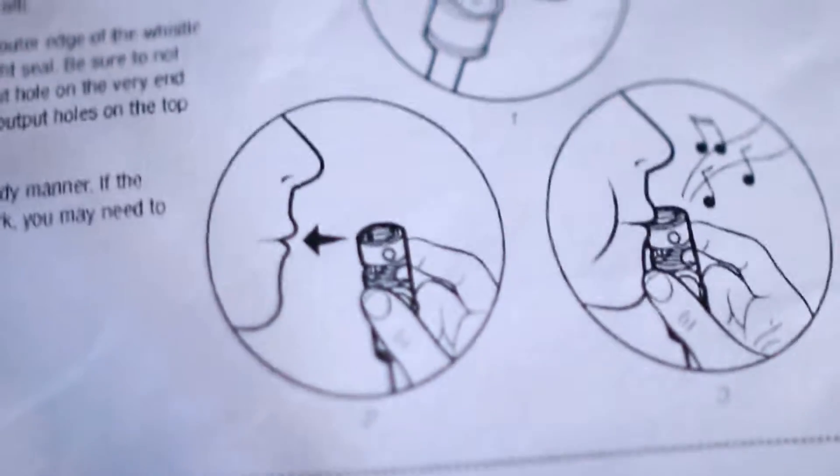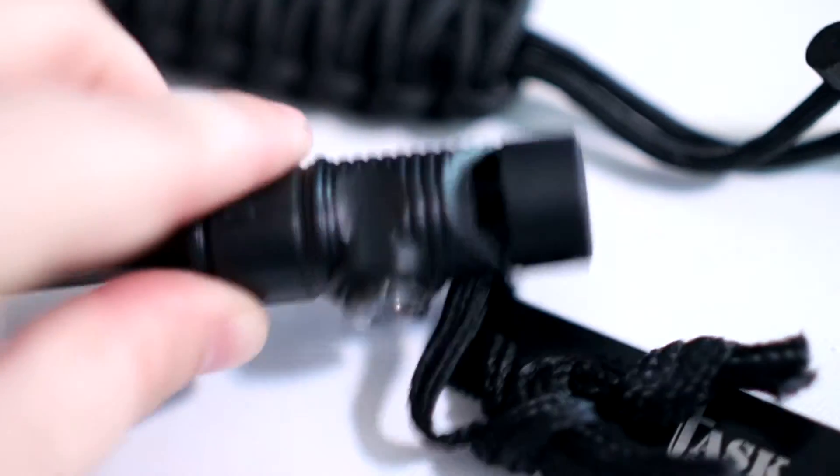You can see it's just a simple, not a large instruction manual, just to show you the basics. And another cool feature is it actually has a whistle, and of course, instructions on how to use the whistle. That's right here on the tip of your fire starter.